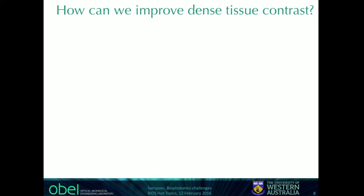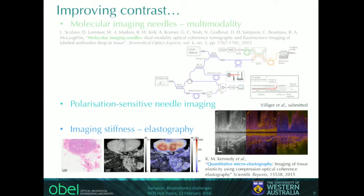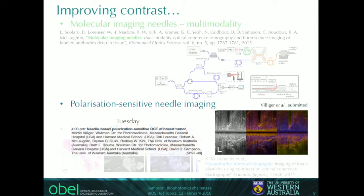We've been thinking about how to improve that situation and looking at a range of possibilities: fluorescence, birefringence, stiffness, and attenuation. I'm going to tell you about those latter two in the remainder of this talk. There is also a talk by Martin Villiger on Tuesday at 4 p.m. that will expand upon our work on polarisation-sensitive OCT in a needle.